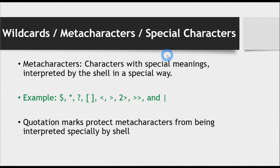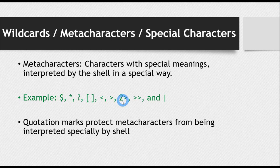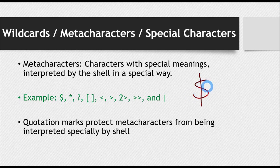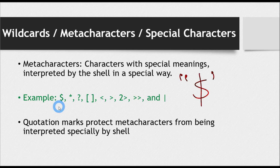There are some special characters in shell scripting, also called wildcards or meta characters. These have special meanings and are treated by the shell in a special way. For example: dollar sign ($), asterisk (*), question mark (?), and so on. Dollar is actually used before variables — that is its special purpose. If we do not want a particular special character to be treated specially by the shell, we enclose it in quotation marks, and this way it is treated just like any other character.